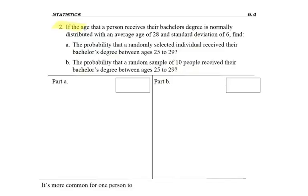Look at problem number two. If the age that a person receives their bachelor's degree is normally distributed with an average age of 28 and a standard deviation of 6, find the following.